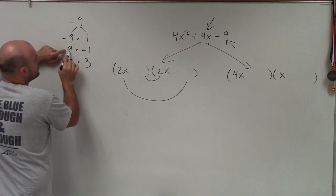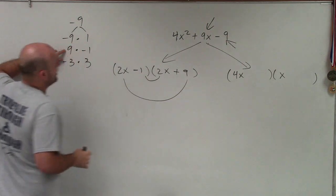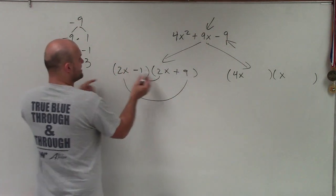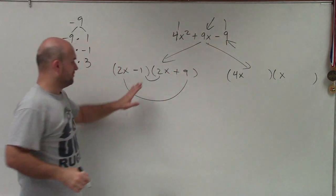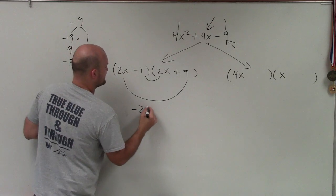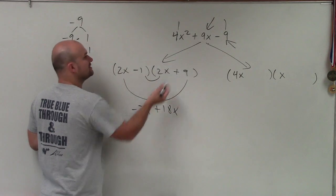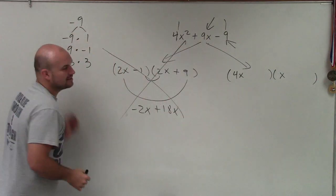And again, it doesn't matter which way you put them in there. So we know that the first and the last give us our two values. But what about the inner? So here I'd have negative 2x, and here I'd have positive 18x. Unfortunately, they do not combine to give us 9x. So therefore, the 2x does not work.